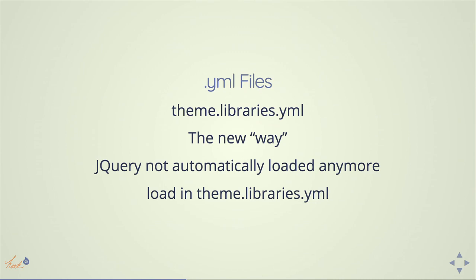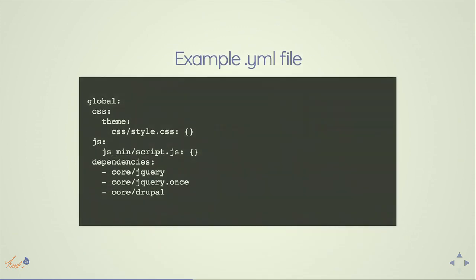Another really big shift in Drupal 8 is libraries.yaml — you can load libraries and now you're not loading jQuery globally. You can have this little YAML file and load jQuery there, plus any other CSS, JavaScript, or source files. For the global library it looks like this — and if you want to create a library just for a specific page and load it there, you can do that too. Get really interested in your libraries.yaml file because there's a lot of power there. And if you need jQuery, this is where you turn it on.